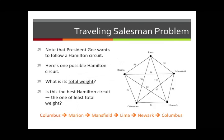Notice that what President Gee is looking for here is a Hamilton circuit — he wants to visit each vertex exactly once. One example of a possible trip is the Hamilton circuit shown in orange at the bottom: Columbus to Marion to Mansfield to Lima to Newark and then back to Columbus, visiting each campus exactly once. Notice that Columbus is listed both at the beginning and the end, and there are five vertices listed in total.